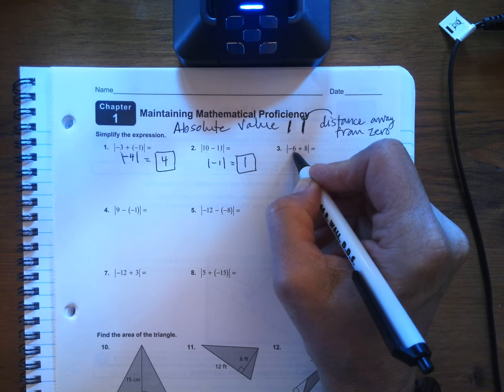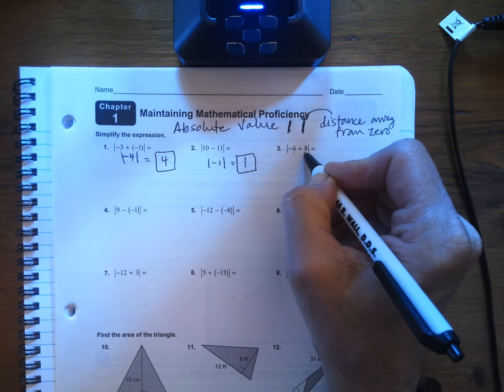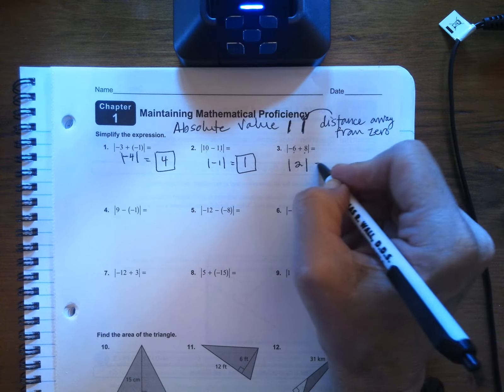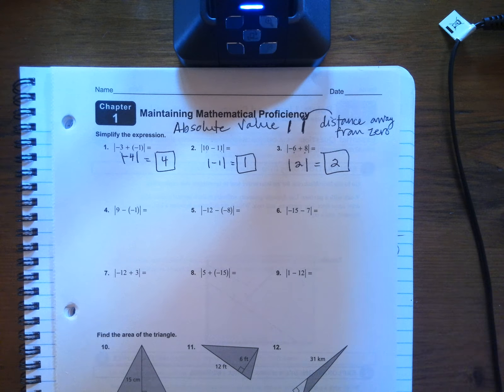This is six negatives added to eight positives. So it's the absolute value of two, which is two away from zero.